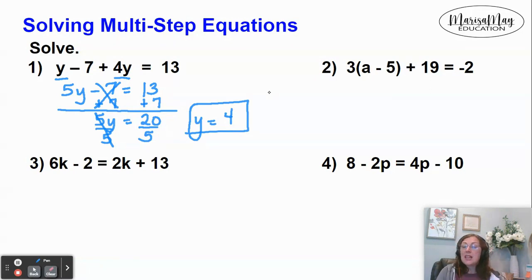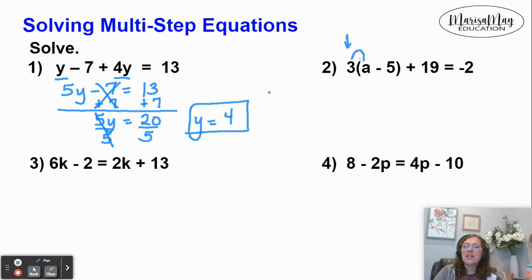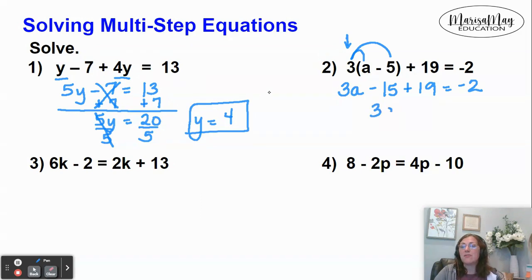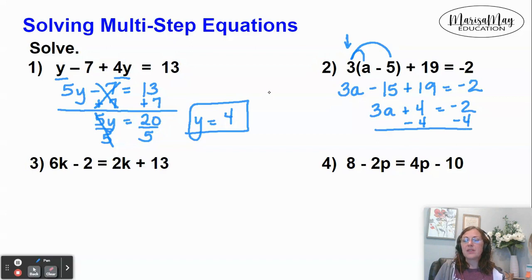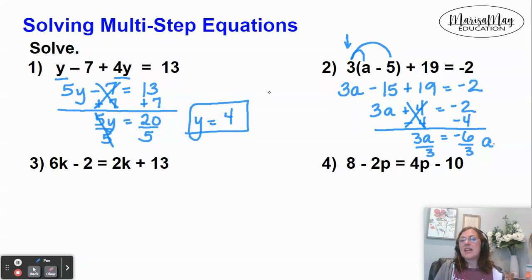Take a look at number 2. This one, I see a number in front of a parentheses — that lets me know I can use the distributive property. So I'm going to distribute the 3 to the a, giving me 3a, then distribute the 3 to the 5, giving me 15. Then I can combine like terms on the left: minus 15 plus 19 gives me 4. Now it's back to a two-step equation. What's happening to your variable? It's being multiplied by 3 and being added by 4. So we do the opposite of adding 4, which is to subtract 4. Opposites cancel, giving me 3a equals negative 6. Then we do the opposite of multiplying by 3, which is divide by 3, and that gives me a equals negative 2.